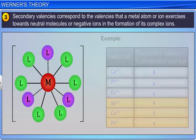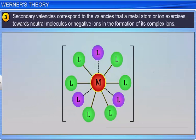For example, in the complex CoCl3.6NH3, the 3 chlorides are held by primary valencies, and the 6 ammonia ligands are held by secondary valencies.